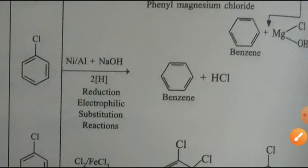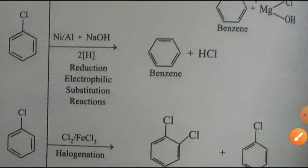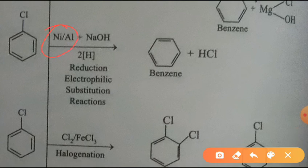Next is the reduction of chlorobenzene using nickel, aluminium, and NaOH. Reduction takes place and you get benzene, as H takes the place of chlorine.